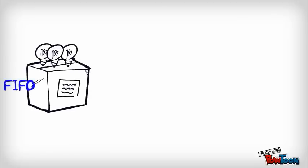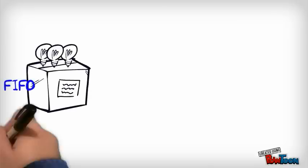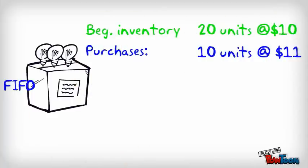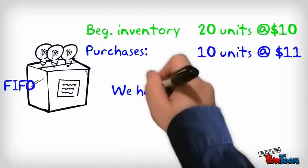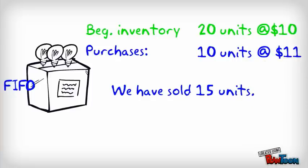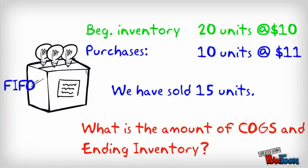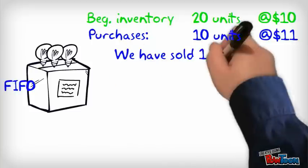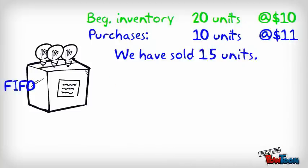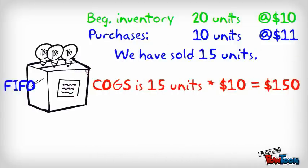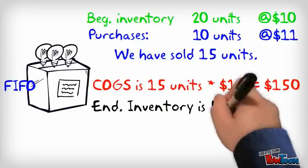Let's assume you're selling light bulbs and using the FIFO method. At the start of the year, you had 20 units at the price of $10, and you purchased 10 more at the price of $11. We know we have sold 15 units, so what is the cost of goods sold and ending inventory? Since under FIFO what we bought first is the first to be sold, we assume we sold 15 units purchased at $10, giving us a total of $150. The ending inventory is 5 units at $10 and 10 units at $11.